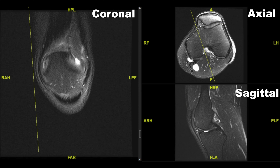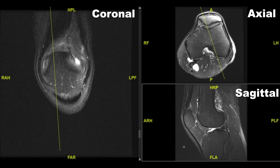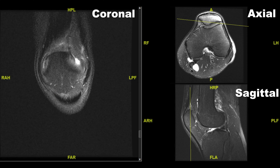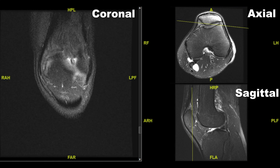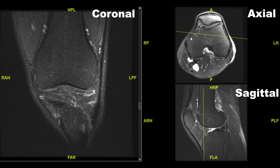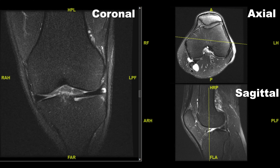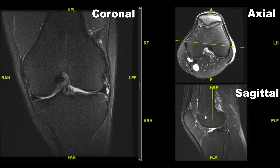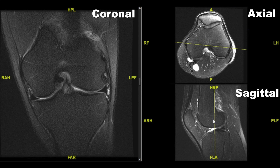Going down to the bottom right, we can see the front and back of the knee. On the coronal we can see our patella, and here's where we are in relation to the axial sequence and the sagittal sequence. As we start moving through to the posterior part of the knee, you can see how the localizer lines are moving towards the back of the knee on both the axial and sagittal.